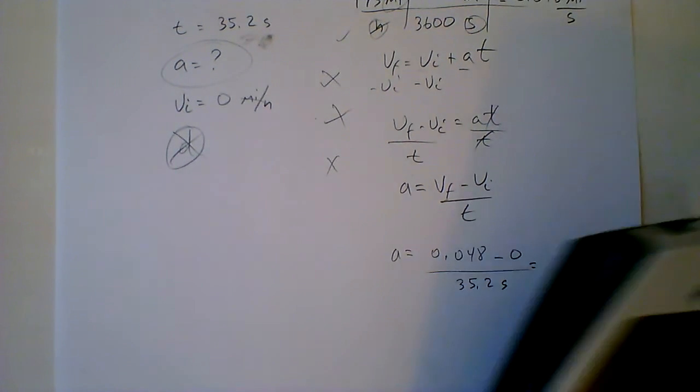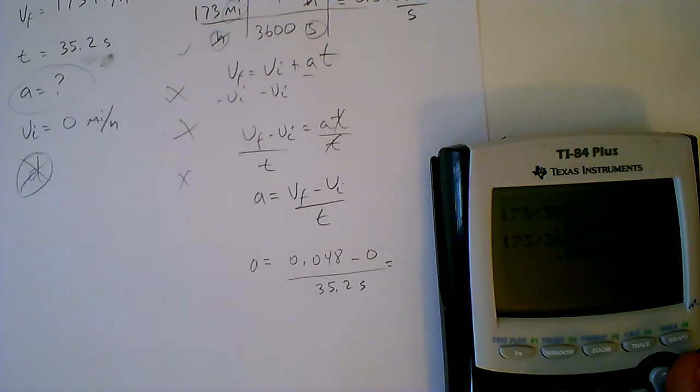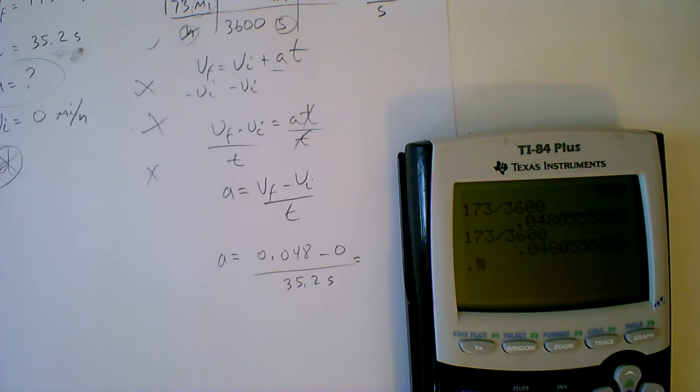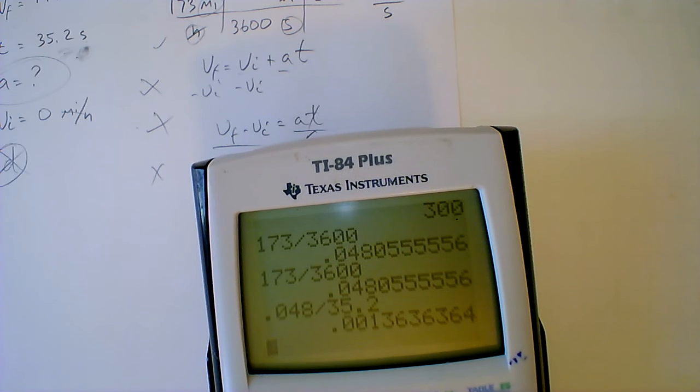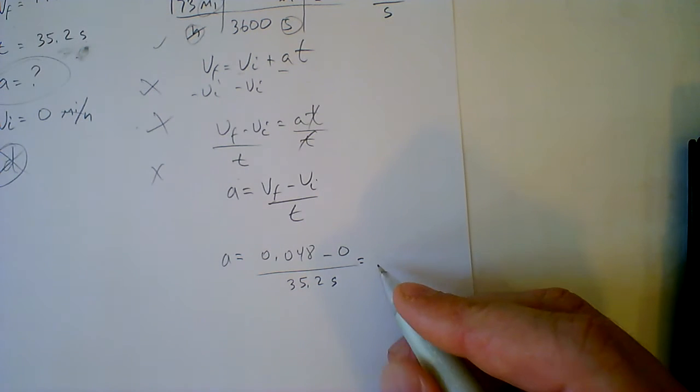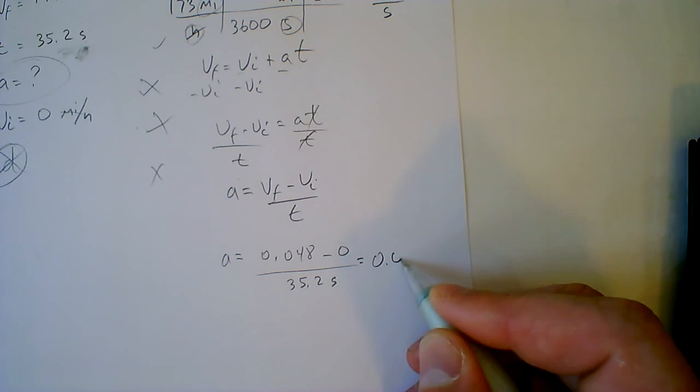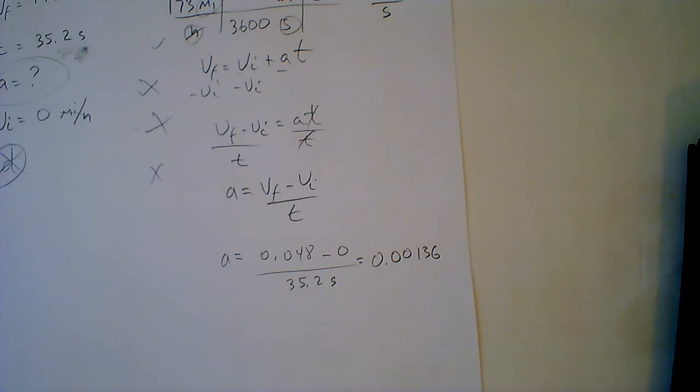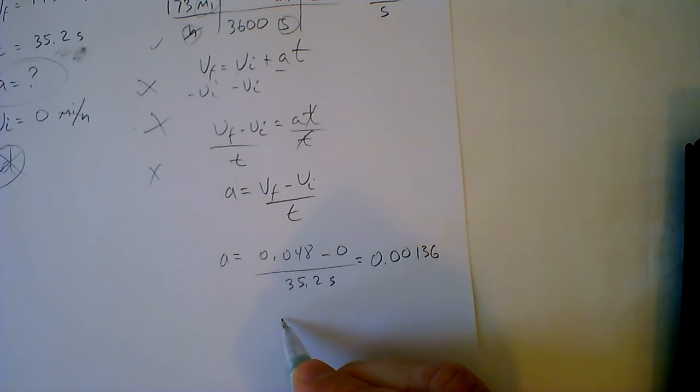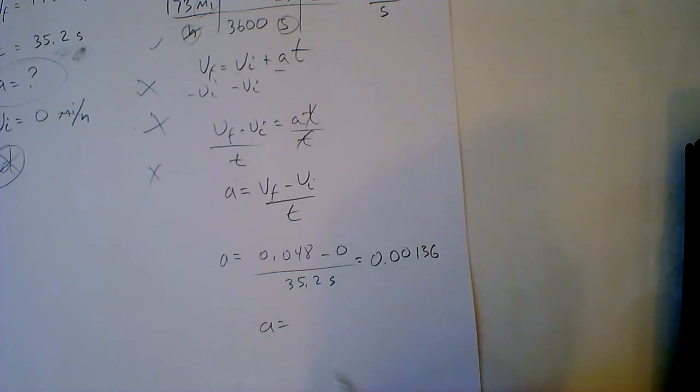So I'll take your calculator, and we have 0.048 minus zero. So you can leave that out, divided by 35.2 equals, and we get 0.00136. So 0.00136. And so the acceleration here will be 0.00136.